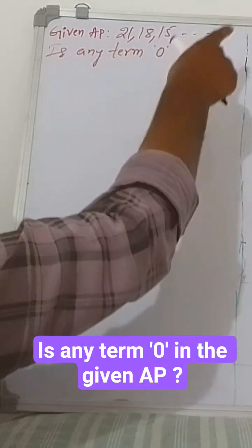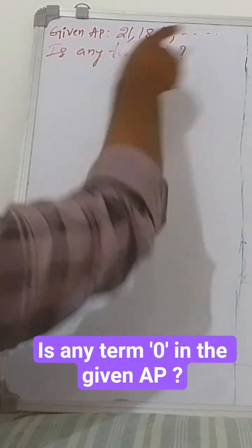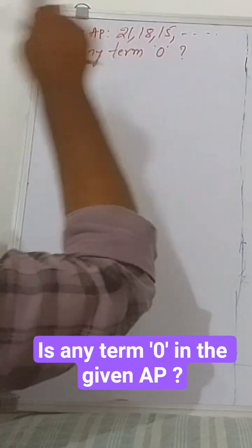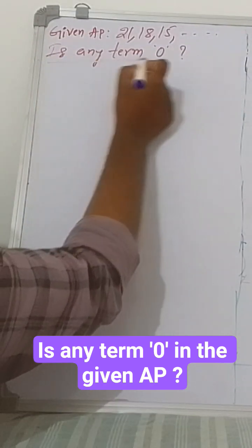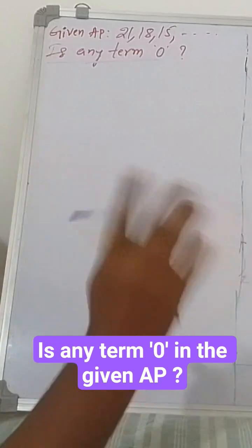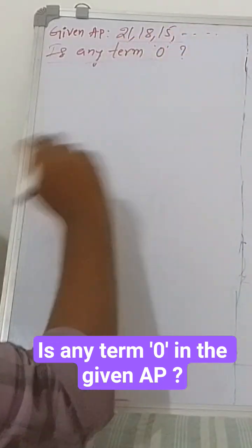Given AP - arithmetic progression - 21, 18, 15. Is any term 0? They are asking which term of this AP is 0.